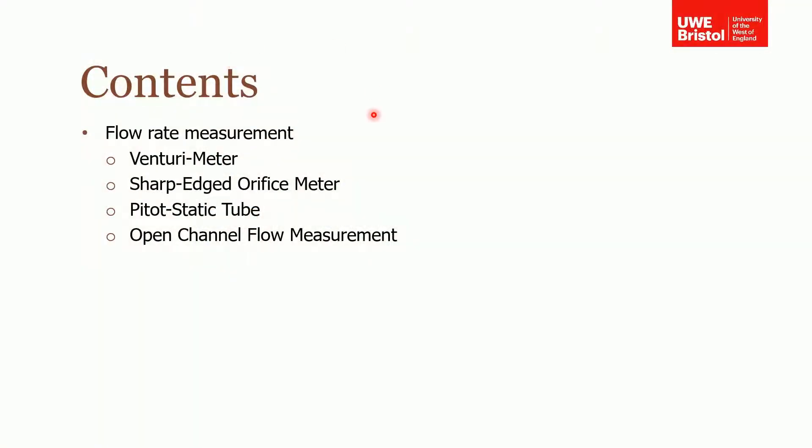Okay, so what we're going to cover in this lecture. I'm going to talk a little bit about why we want to measure flow rate and then introduce ways that we can measure it. These are commercial methods of measuring fluid velocity and therefore the flow rate: the venturi meter, sharp-edged orifice, pitot-static tube, and we're also going to talk about open channel flow measurements which is used for looking at volume flow rates from weirs and that sort of thing.